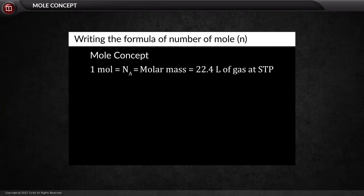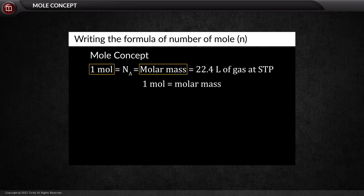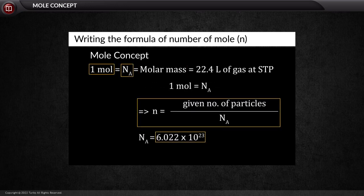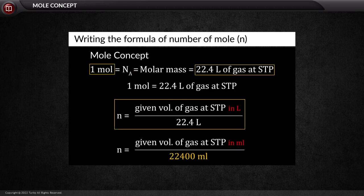Let us derive the formulas from the given relation. One mole equals molar mass. If x grams of substance is taken, then the number of moles n = mass / molar mass. Similarly, the number of moles in terms of number of particles: n = number of particles / Avogadro's number. For a gaseous sample in terms of volume: n = volume at STP in liters / 22.4 liters.